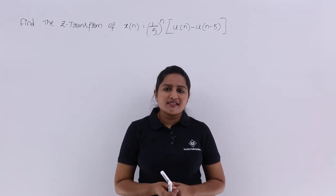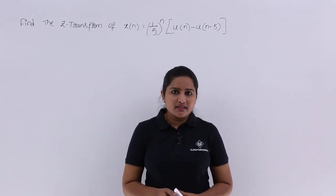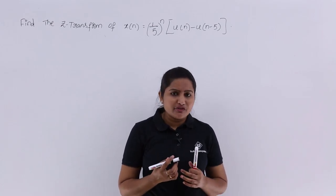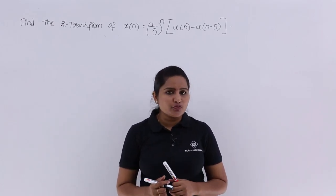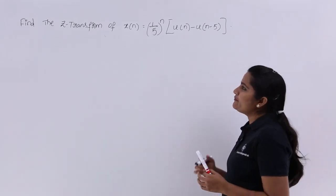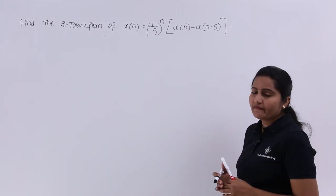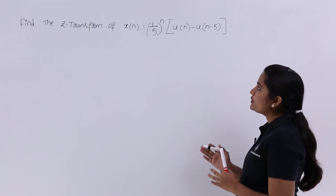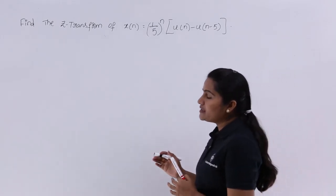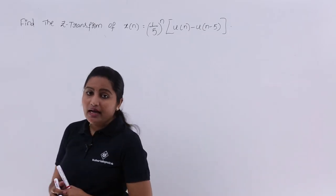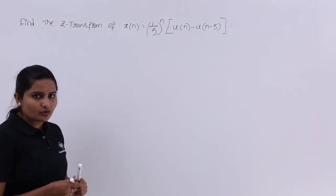In this video we are going to discuss a problem related to Z transform. The problem is to find the Z transform of x(n) = (1/5)^n · [u(n) - u(n-5)]. For this we need to find out the Z transform, and I will give you two ways to calculate this — you can choose your own way.